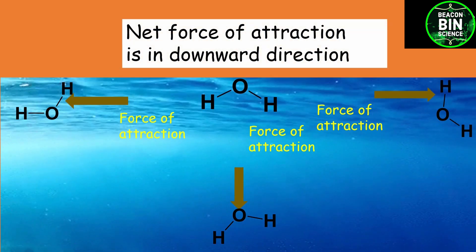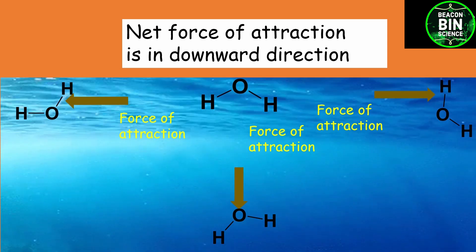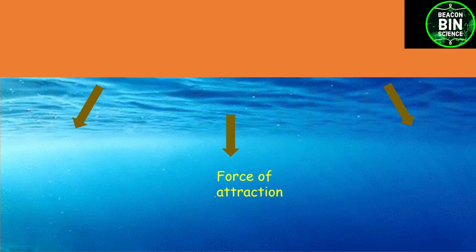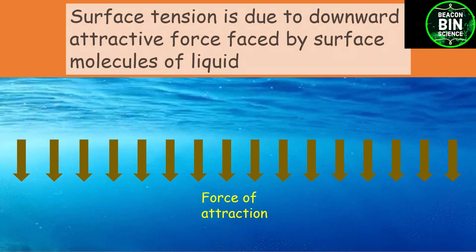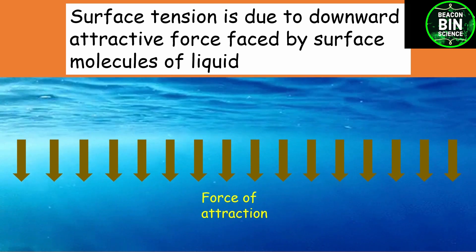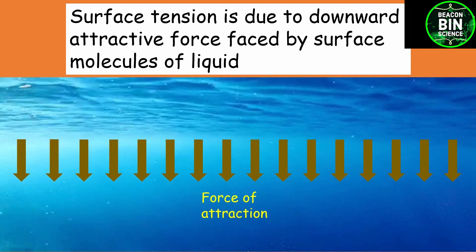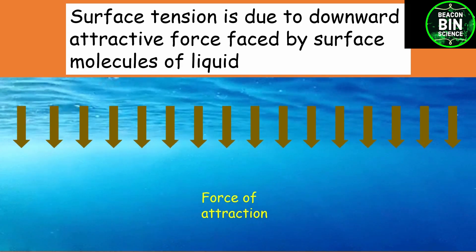The surface tension between the two non-miscible liquids causes the two liquid layers to move apart. Because this tension arises at the surface of the two liquids, it can be termed as interfacial tension. But again, the question is why this all happens — to understand this, we need to know what surfactants are.